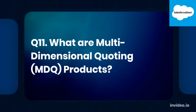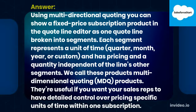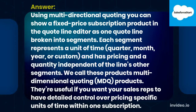Q11. What are multi-dimensional quoting products? Each segment represents a unit of time — quarter, month, year, or custom — and has pricing and a quantity independent of the line's other segments. We call these products multi-dimensional quoting products. They are useful if you want your sales reps to have detailed control over pricing specific units of time within one subscription.